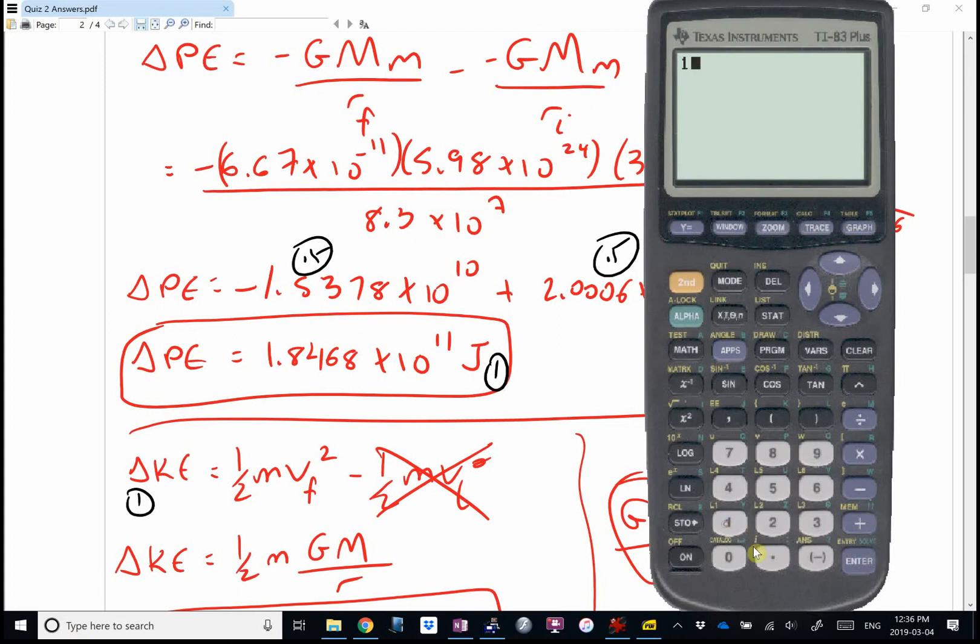I could have gone 1.5378 × 10^10 divided by two. That's going to be really close to your change in kinetic energy. It's going to be a tiny bit off because this answer here is rounded off. But if I'd had it stored on my calculator, I could have gone divided by two. And as a shortcut, I could have said, I can skip finding V. That's the kinetic energy in orbit right there.